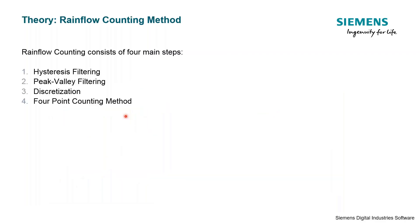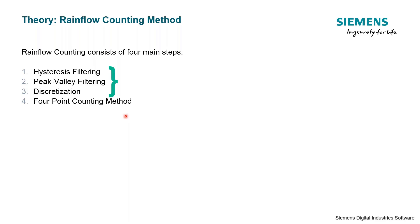To be able to cycle count and get stress values for these more interesting loading histories, we use rainflow counting, which is a four-step method. The first step is hysteresis filtering. Next is peak value filtering. Discretization is another way to reduce data size. And then the four-point counting method is where the cycles are actually going to be counted. So basically, we have three steps to simplify and reduce our trace, and then the last step is the actual cycle counting.